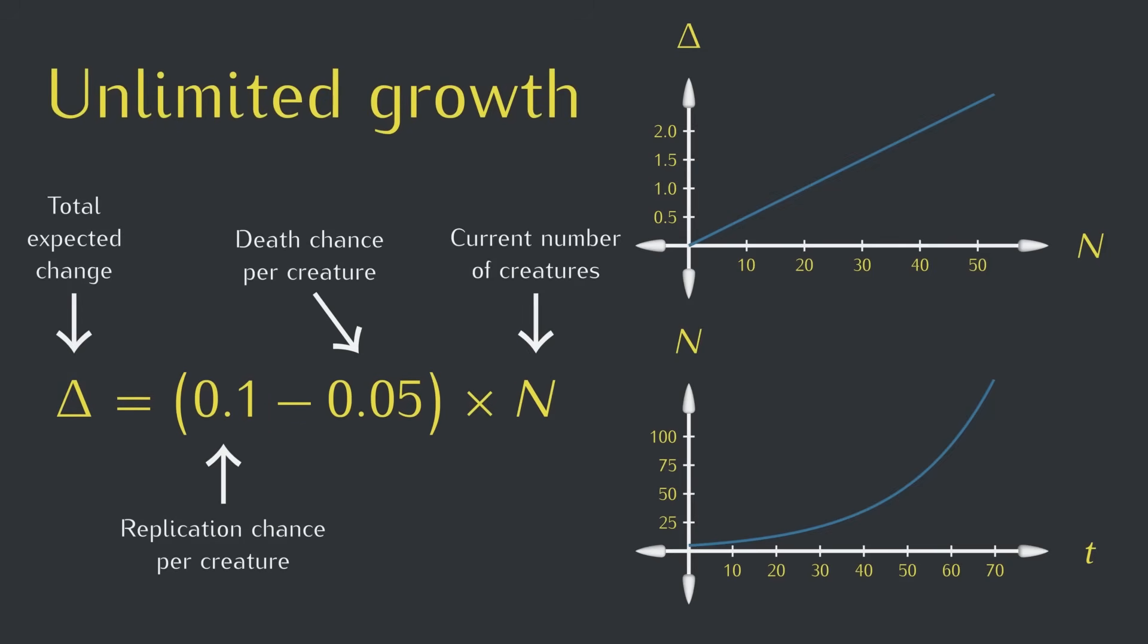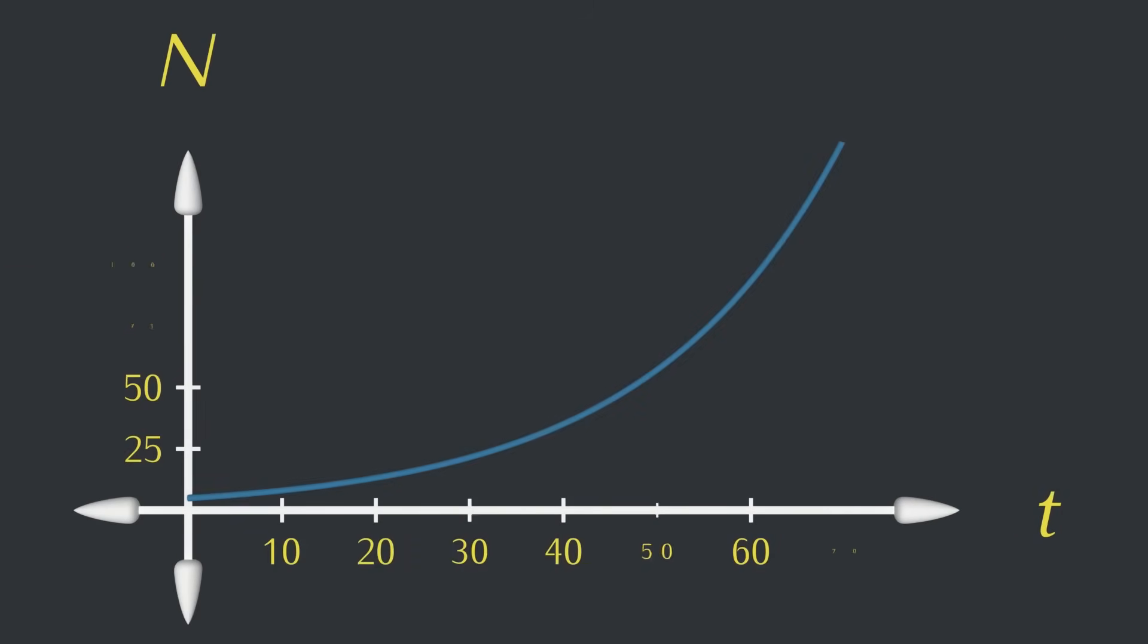Okay, so that's what the world looks like when growth is completely unchecked, but what should it look like if we want growth to level off at some point? To figure this out, let's work backward.